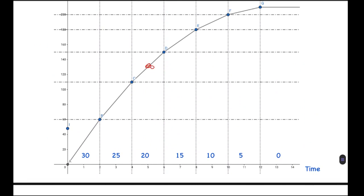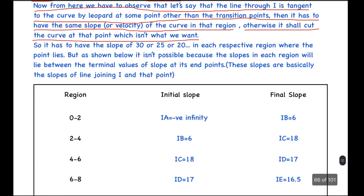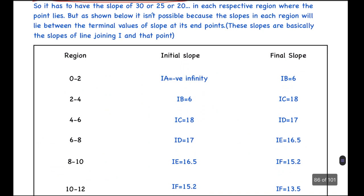So basically, what I'm saying here is that if we consider any non-transition point, so at this point, let's say the graph of the deer passes like this. But this will obviously be cutting the graph because this slope isn't changing and this slope is neither changing. So they can be tangent only when both the slopes are equal.